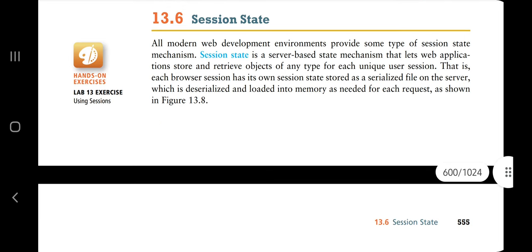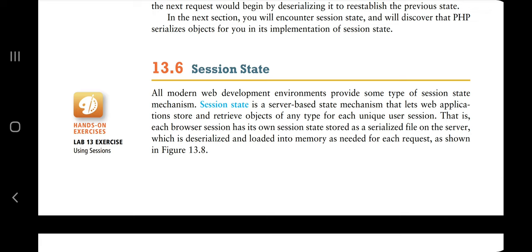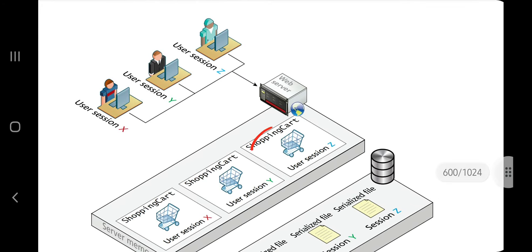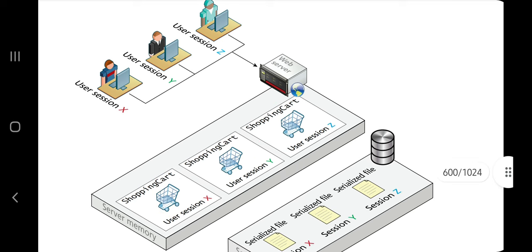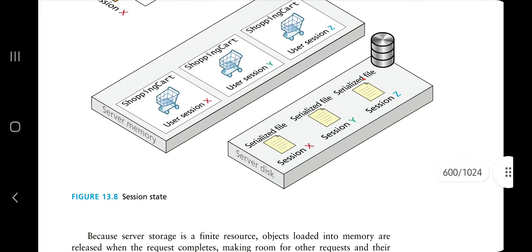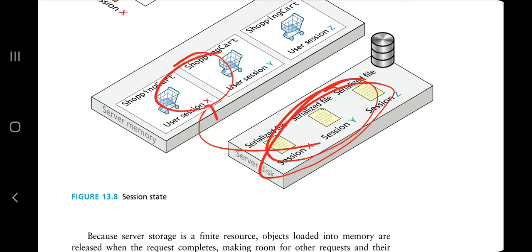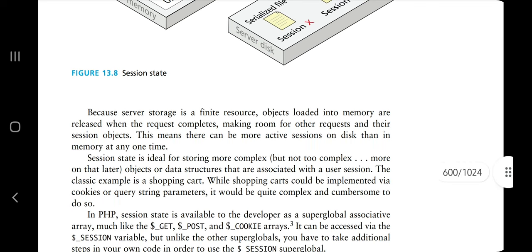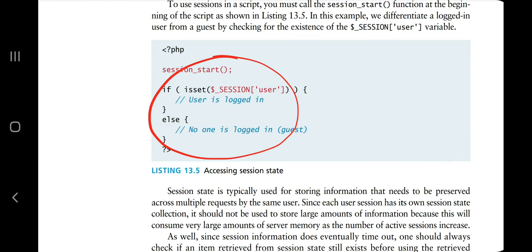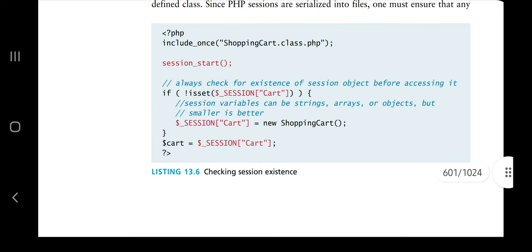Session state means what was the state of the user when they previously visited a website. For User X, User Y, and User Z, their sessions are stored, serialized, and saved in the database. When the user visits again, the session is deserialized and shown to them as they had left it earlier. In the code, if the session has started, you access it from where the user left off. You can also check session existence using that part of the code.